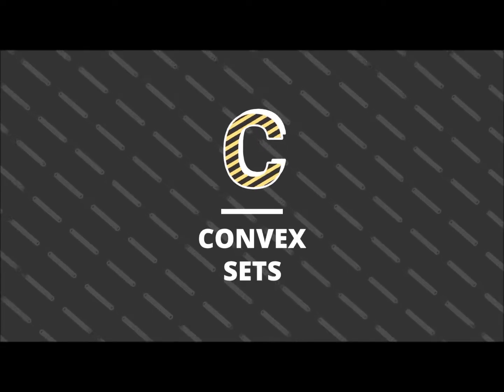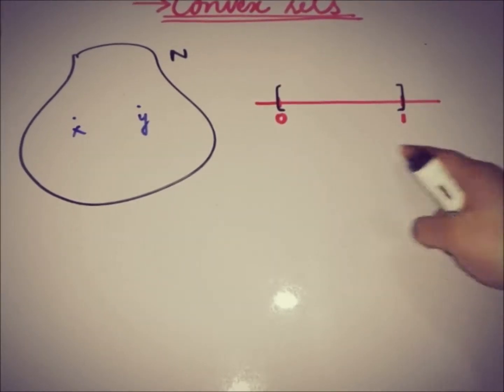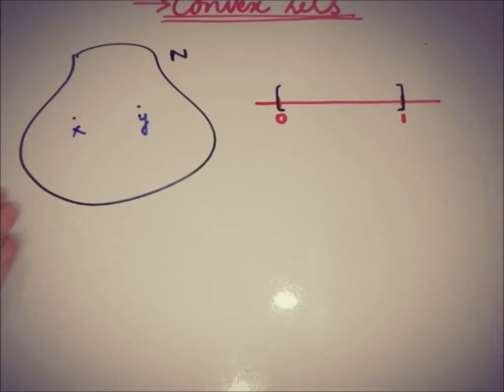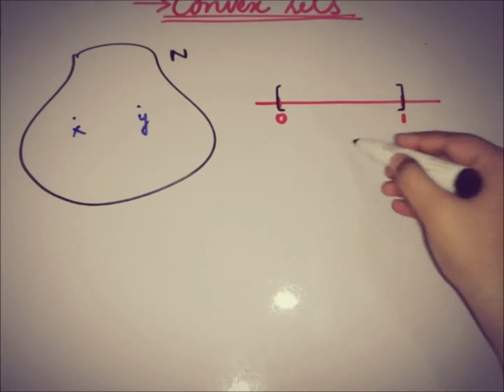Hello everyone, this is DA from Academy. Today we are going to see one of the important concepts of functional analysis, that is convex sets. If we have a linear space N and we take two points from that linear space, we have scalars from the closed interval zero to one. We take two elements x and y from that linear space and pick a scalar alpha from that interval zero to one.